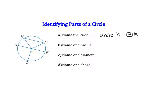Now name one radius. There are actually a lot of radii we could name — anything that goes from the center out to the edge. So we could say KO, KN, KR, KP, or KQ. Those are all radii — anything from the center out to the edge.